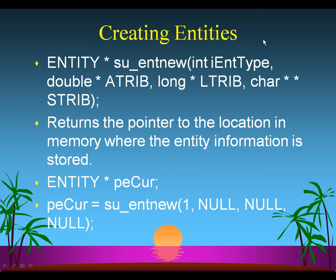Creating entities: there is a function called su_intnew available in the SLAM library. This will create a new entity and allows you to specify things like the entity type (etype attribute), the A-TRIB, L-TRIB, and S-TRIB attributes. When you call this function, it returns a pointer to an entity — a pointer to all the information about the entity and where it is stored in memory.